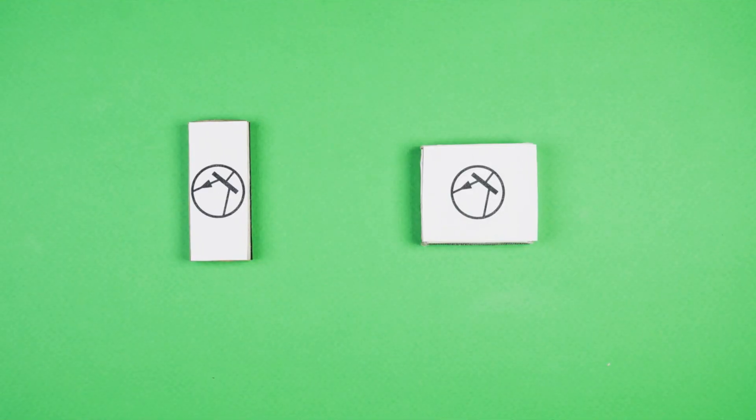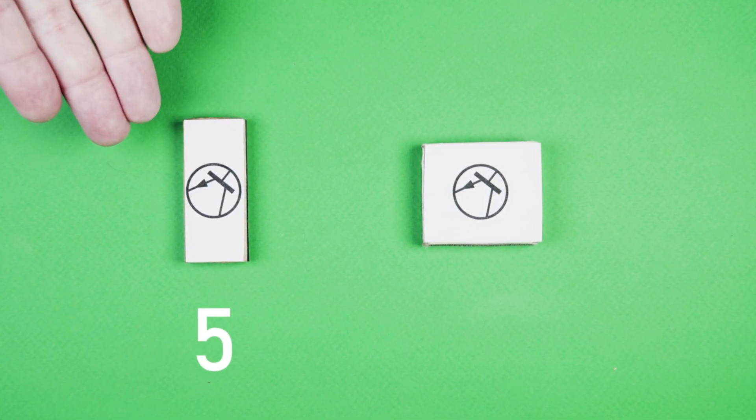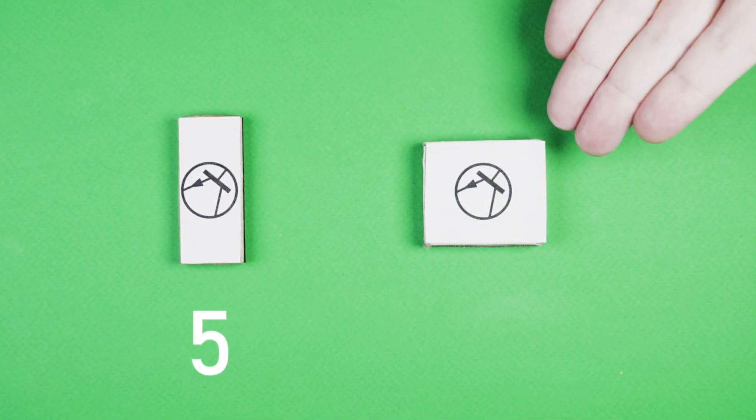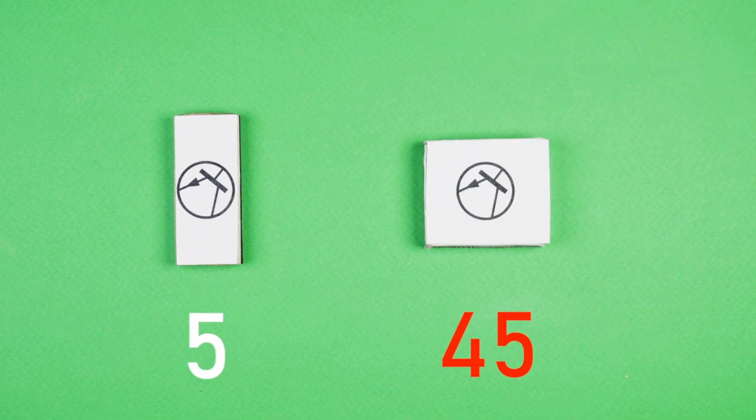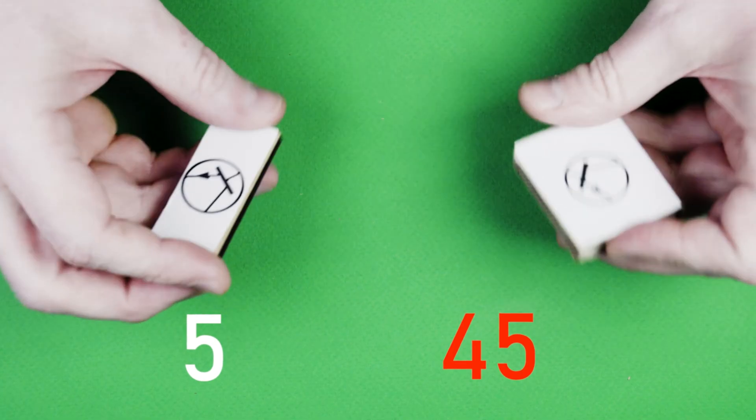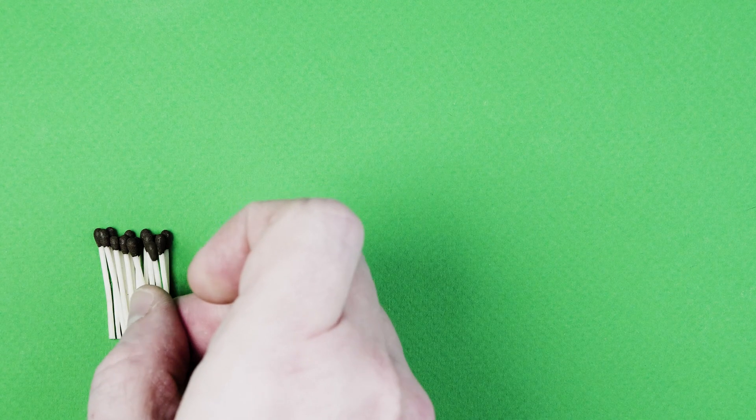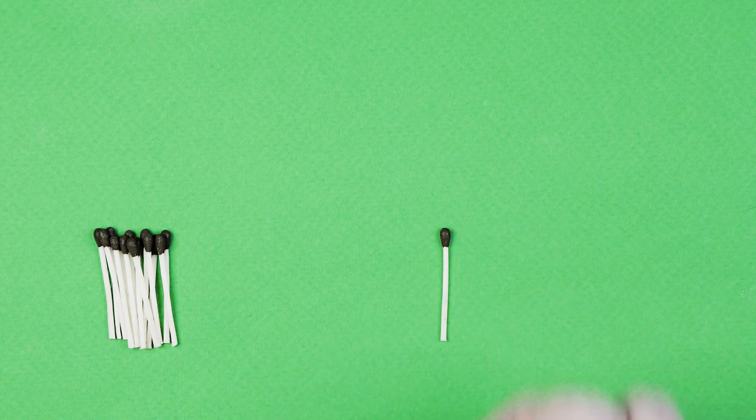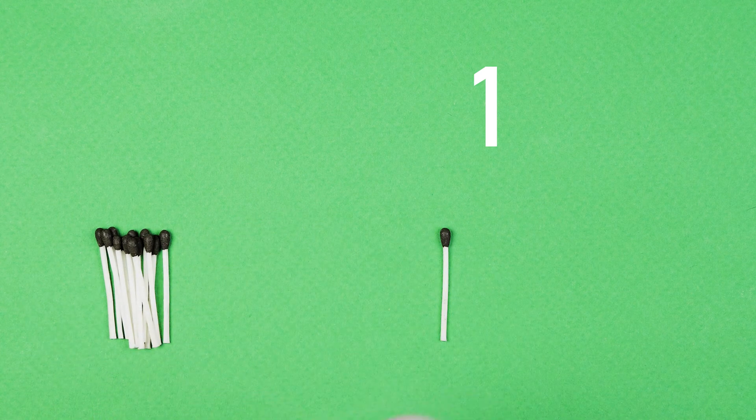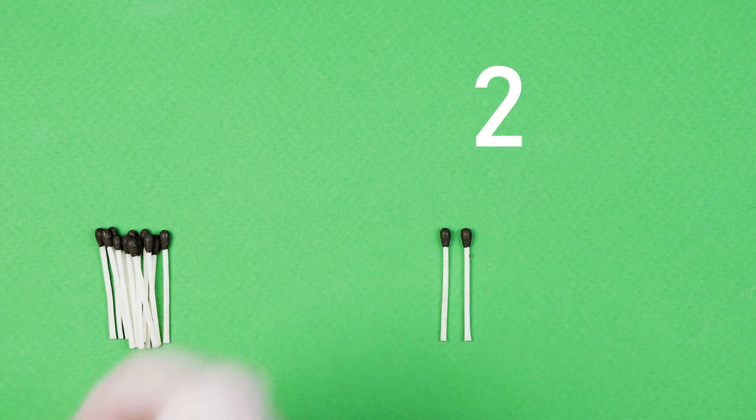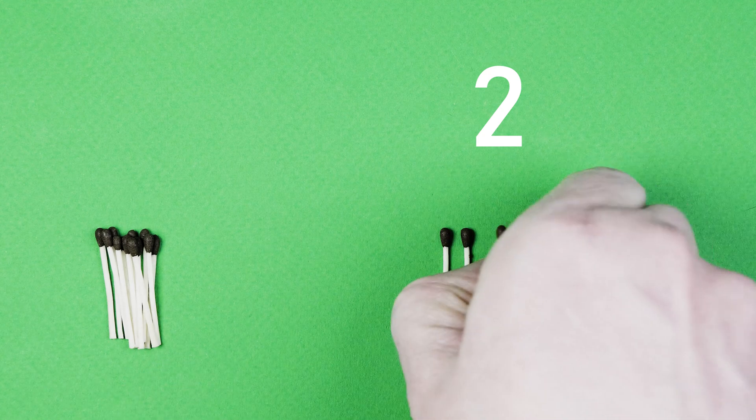If I told you this box contained 5 matches and this one 45 matches, your brain would visualize these numbers long before you actually saw the contents of the boxes. When it comes to decimal numbers, most people are capable of doing basic mathematical tasks in their head. And if I asked you to count these matches, you could do it in a snap.